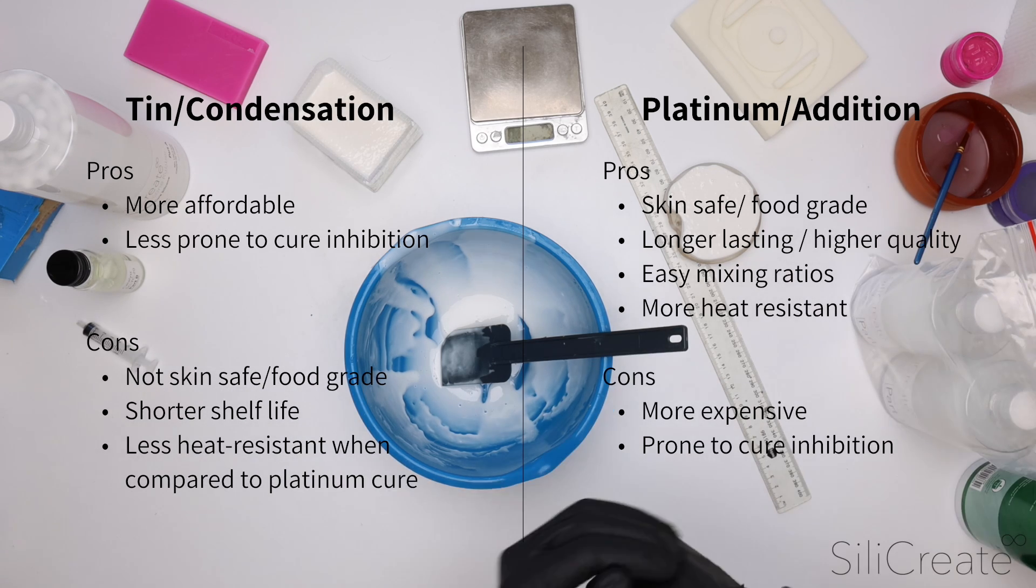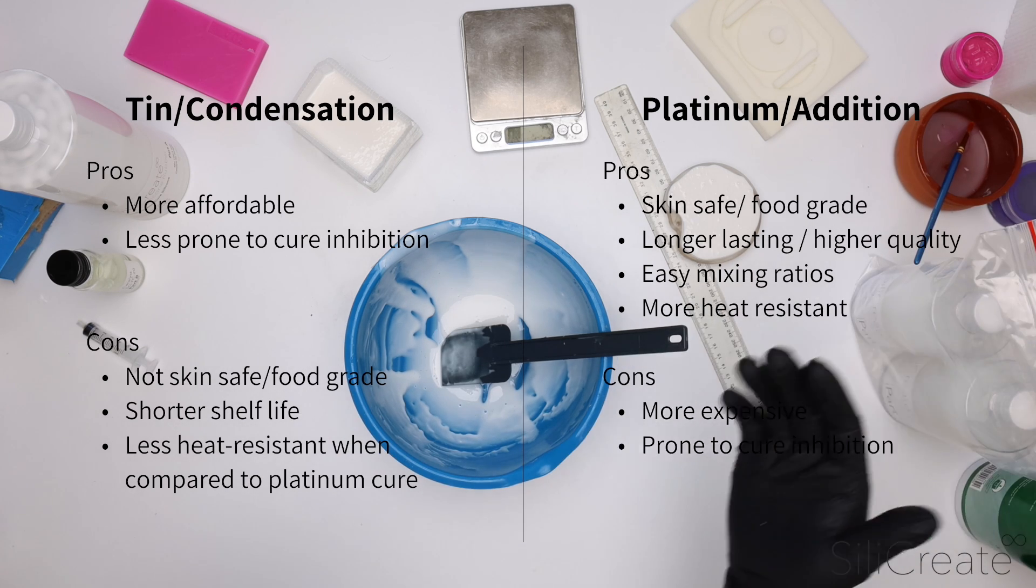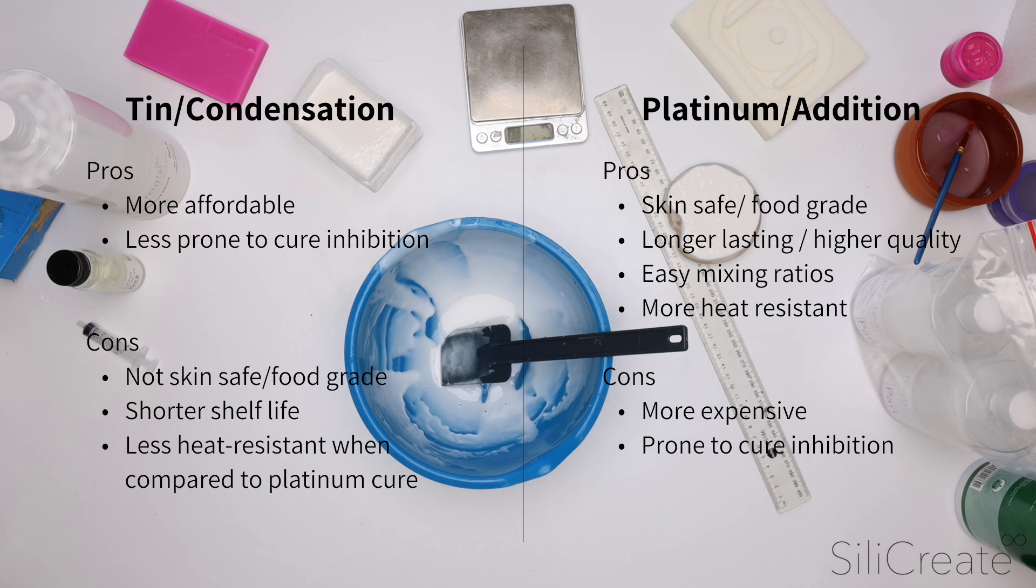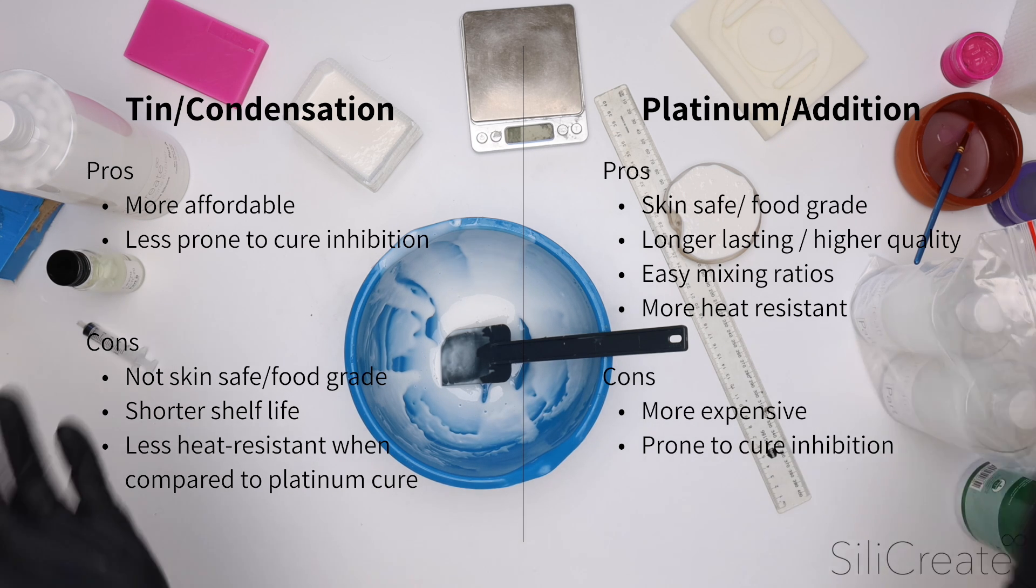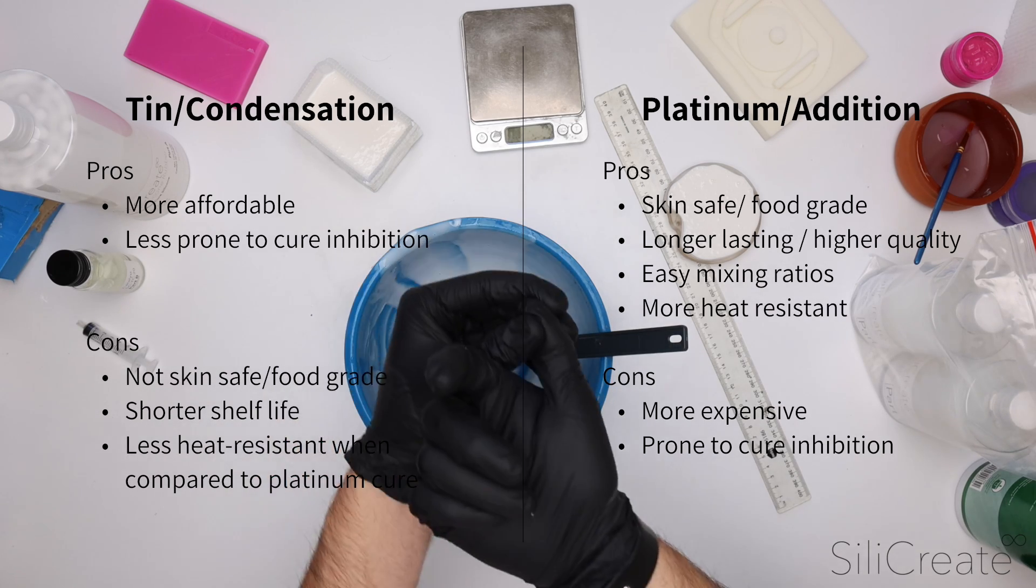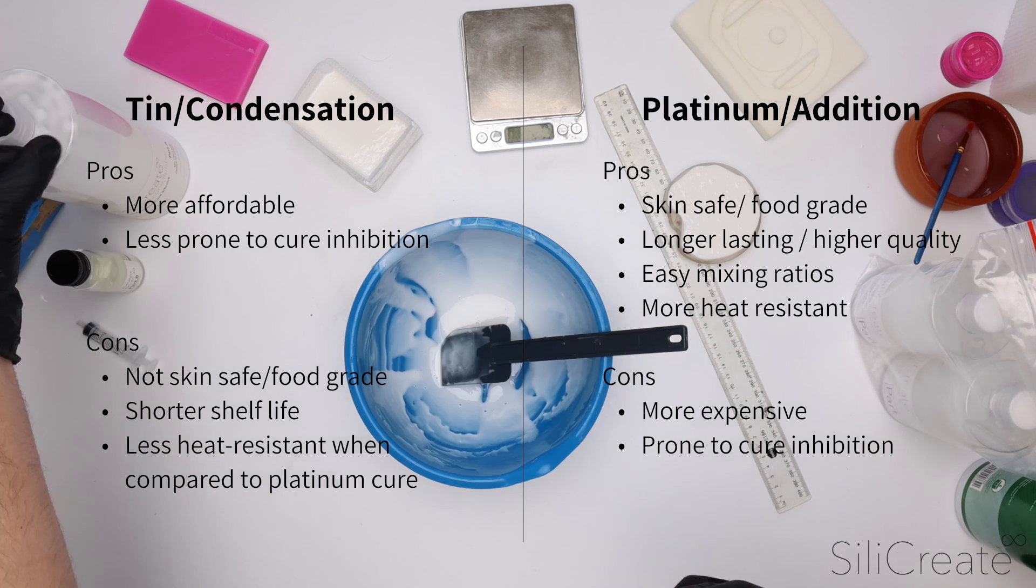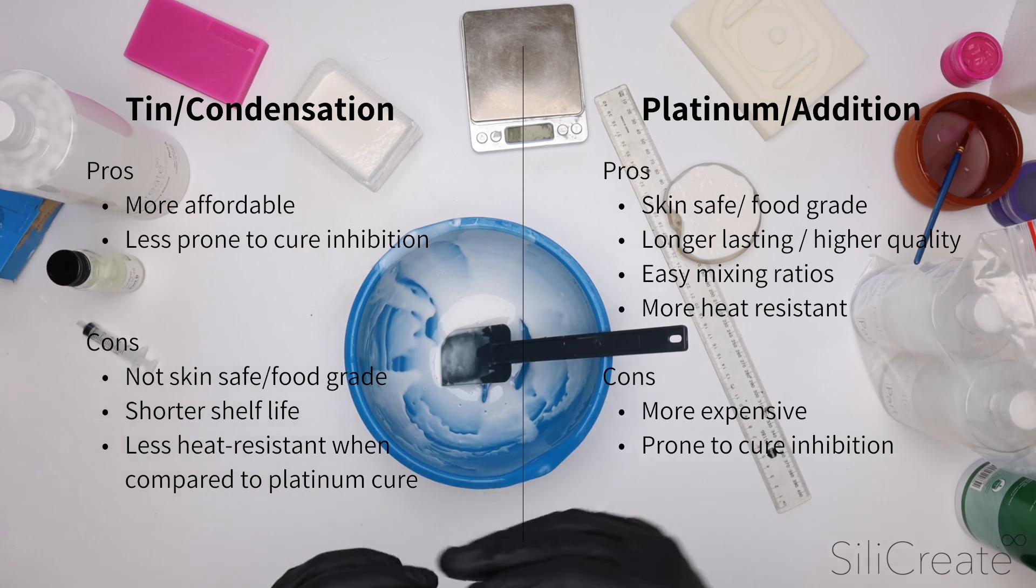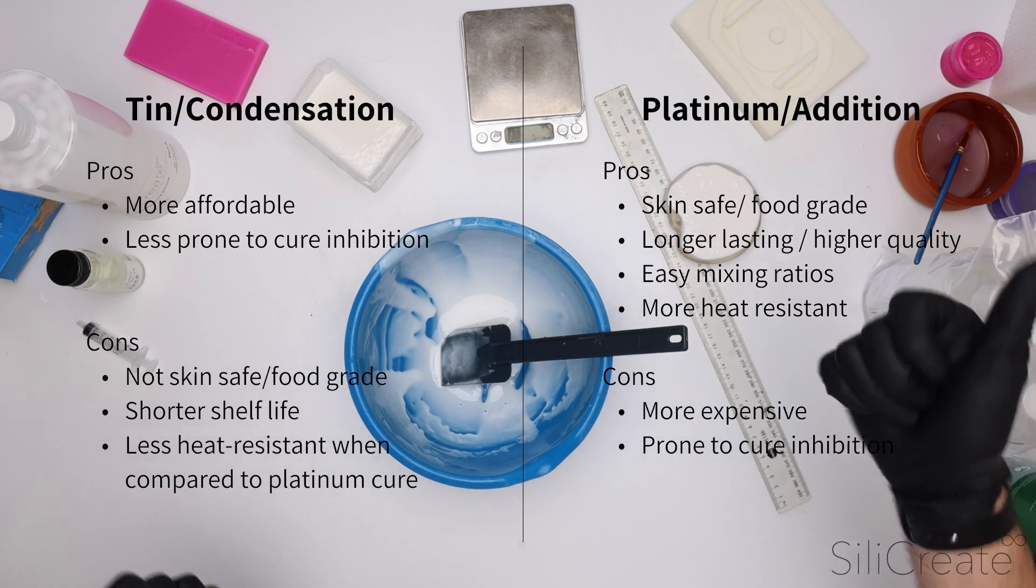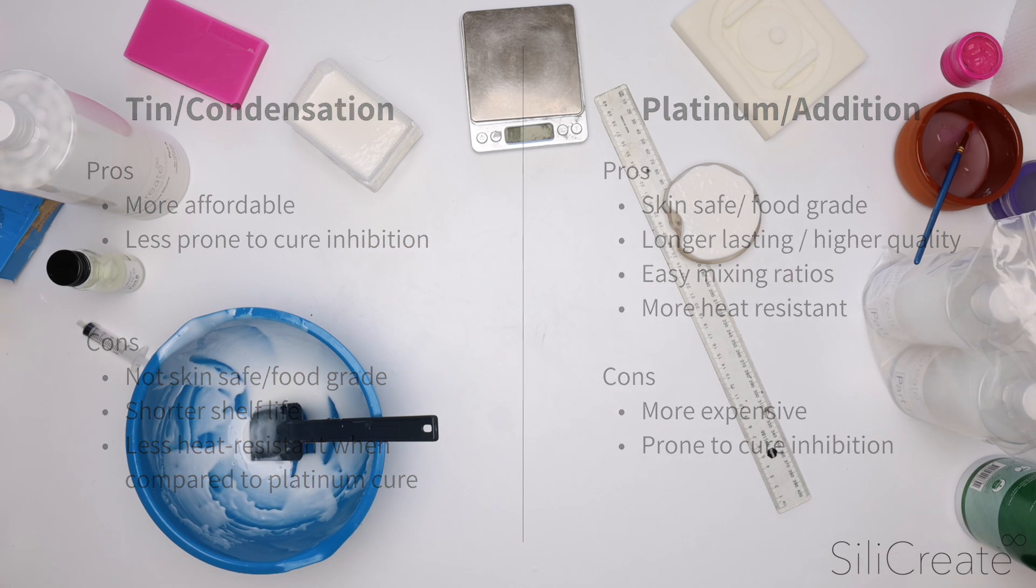So which one should you pick? Generally we're going to recommend the tin cure for just general molding, like if you're making an epoxy mold or a candle mold or that sort of stuff where food grade or skin safe requirements are not really necessary and you're just looking for an affordable option. We're generally going to recommend the platinum cure in any application that requires the silicon to be food grade or skin safe, or where you need a mold that lasts a very long time. We also recommend using it if you just want a bit of an easier silicon to use. Cure inhibition is probably something to think about here. If the material that you're going to mold against has any risk of causing cure inhibition, then you're probably better off going with the tin cure.